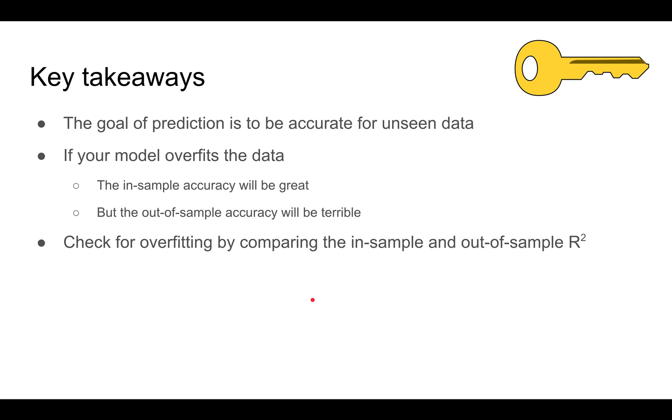Right, so to conclude, the goal of prediction is to be accurate for the unseen data. So we want to check for overfitting, because when overfitting happens, the in-sample forecast accuracy is very good, but the out-of-sample forecast accuracy is terrible. And one way to check for overfitting is to compare the in-sample versus the out-of-sample R-squared. That's all for today. See you next time. Bye.